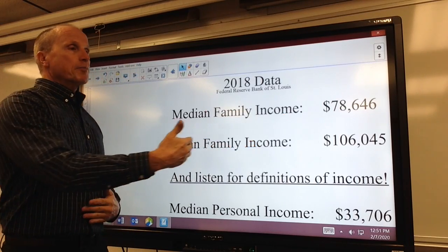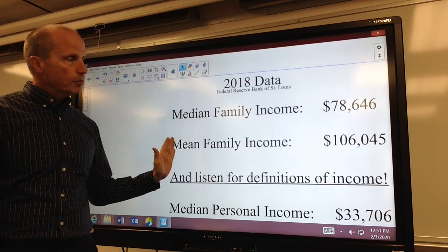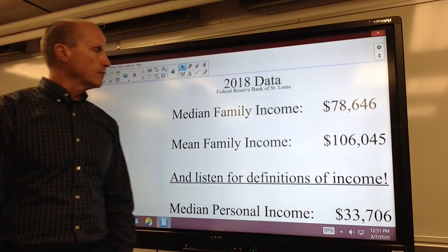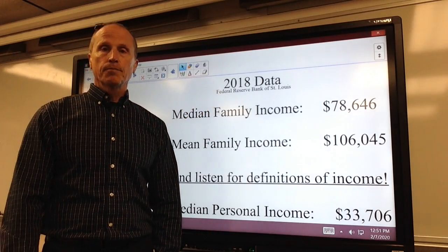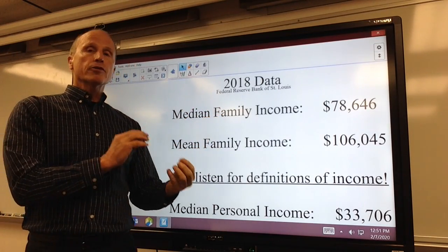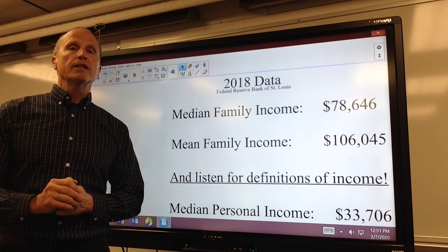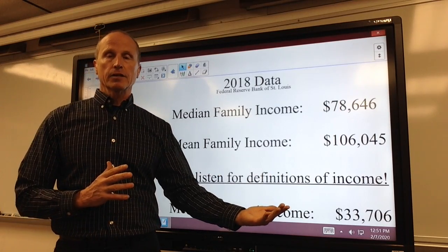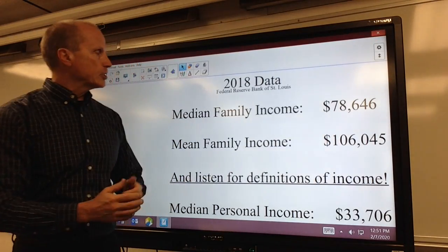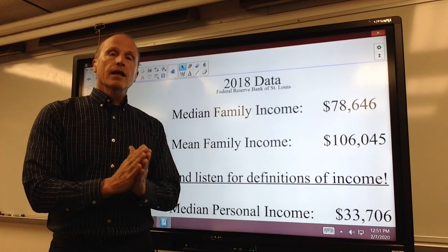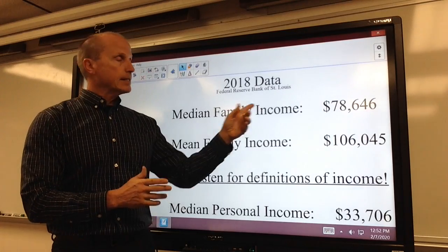Because of outliers — because of the people that make a great deal of money — the mean is very sensitive to outliers, so the mean gets stretched or pulled in that direction. Now, both of these can be reported as the average income. In fact, when we are talking about income in the news, typically they are always quoting the median, because at least then we know that half of the people are making less than that and half are making more than that, since that's the number in the middle.